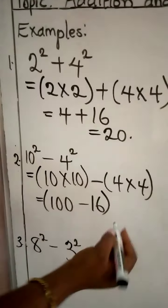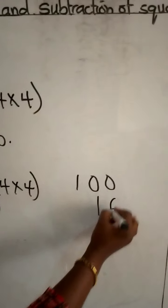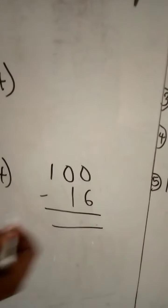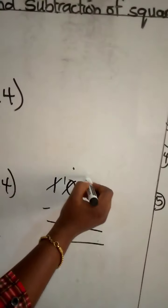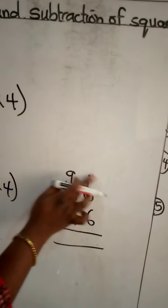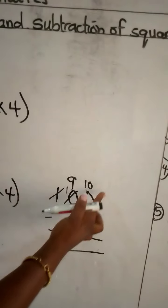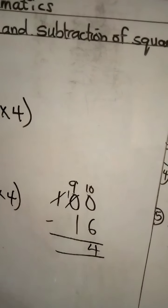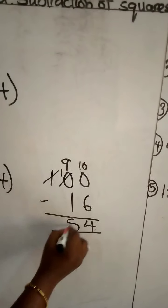So, if we do this. What do we have left? 9. And this is 10. So, 10 minus 6 will give us what? 4. Beautiful. And 9 minus 1 will give us what? 8. So my answer is what? 84.